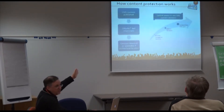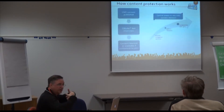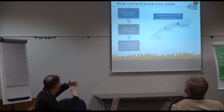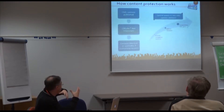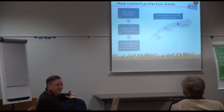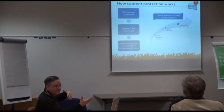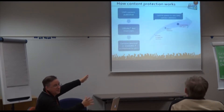Content protection works by having the CB Subs Joomla bot intercept content as the CMS pushes it out for viewing, and checking whether it's allowed to be viewed. If not, it displays a message. You can protect articles, menus, modules, components, or URL parts of your website — this is above and beyond standard Joomla protection.